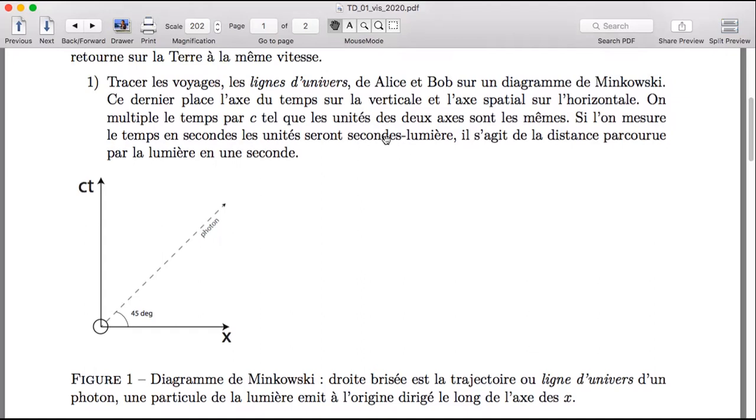So then if we use that as our vertical time axis, and then we would also use light seconds as our units of distance along the x-axis. So if you accept those units, then it becomes clear that this line has to go at 45 degrees.